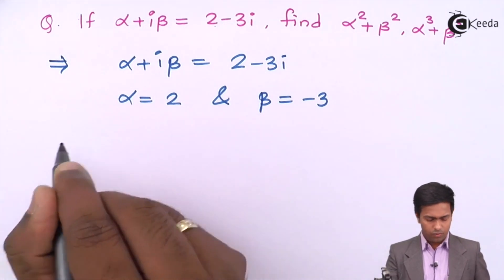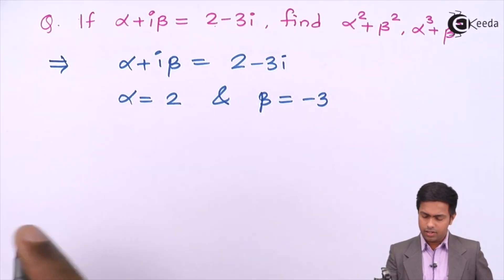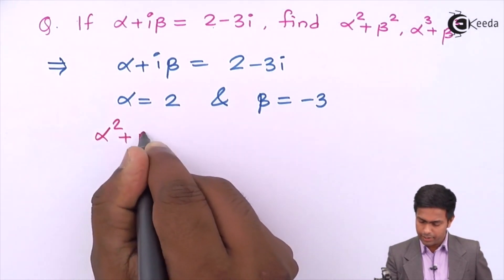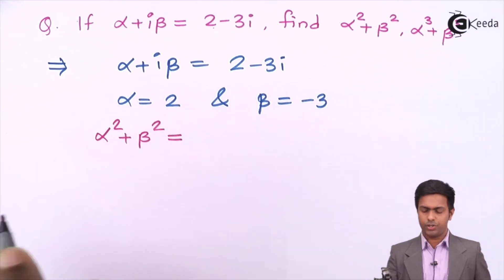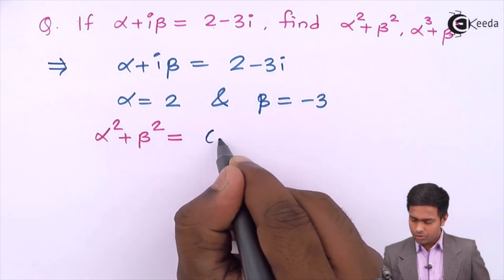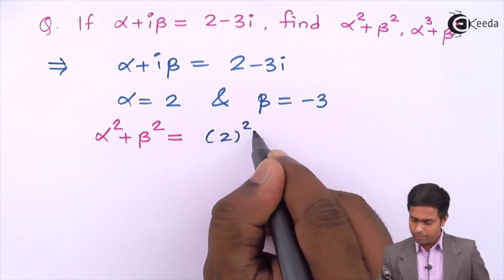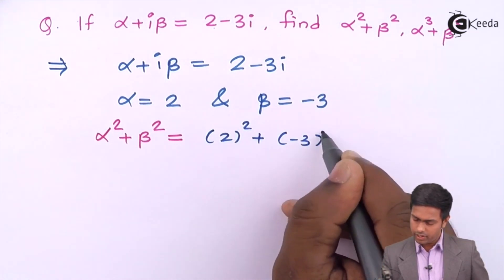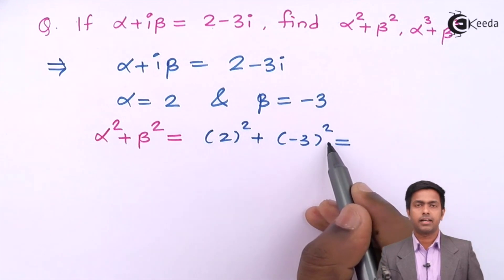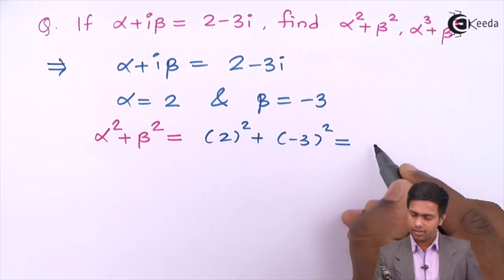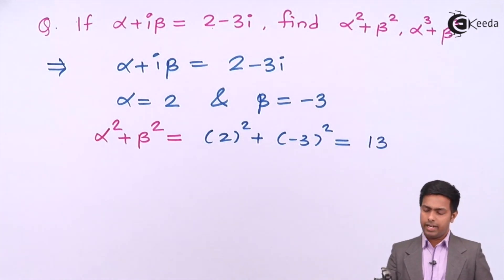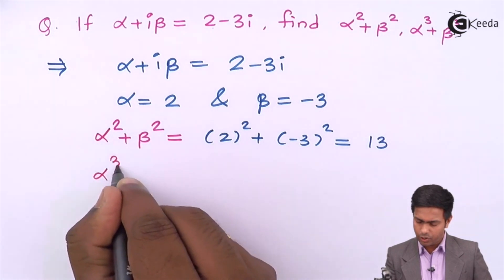First is alpha squared plus beta squared, which equals 2 squared plus minus 3 squared, giving us 4 plus 9, which equals 13.